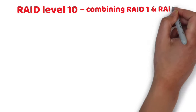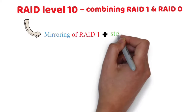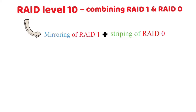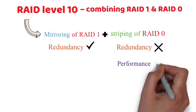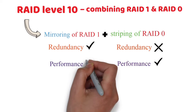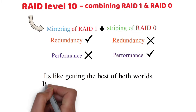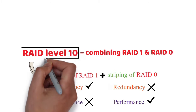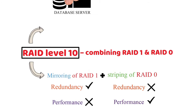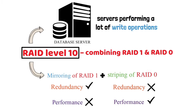RAID Level 10 — Combining RAID 1 and RAID 0. RAID 10 combines the mirroring of RAID 1 with the striping of RAID 0. This way it has the redundancy of RAID 1, which RAID 0 lacks, and the performance of RAID 0, which RAID 1 tends to lack — like getting the best of both worlds. It is best suitable for needs where both high performance and security are required. RAID 10 is ideally used for highly utilized database servers and servers performing a lot of write operations.